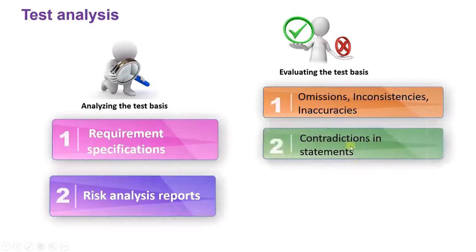The second is contradictions in statements. Suppose the customer has given 100 lines of requirements, but some lines contradict each other. Maybe one line says the window should move up in 10 milliseconds, while another one says it should move up in 20 milliseconds. These are contradictory statements, and we need to get clarification from the customer.